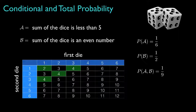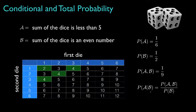Now let's suppose we are given some partial information. Suppose we know that event B occurred — that is, we know the sum of the dice turned out to be an even number. Conditional on knowing that, what's the probability that event A occurred? There's an important rule that relates this conditional probability to the joint probability and the probability for the conditioning event.